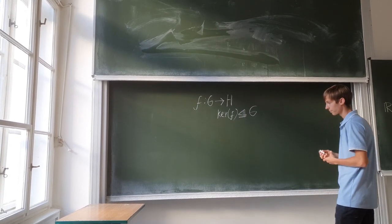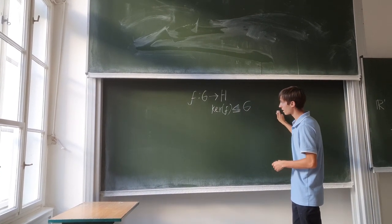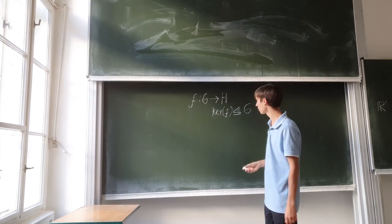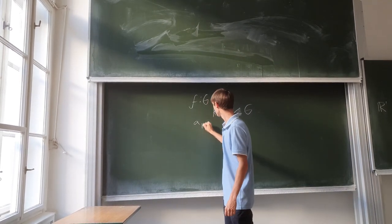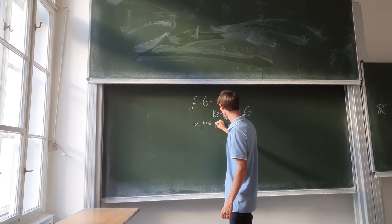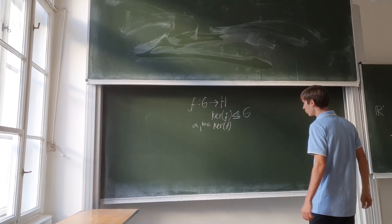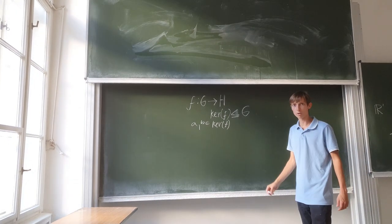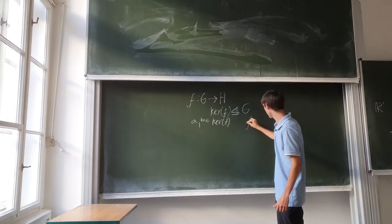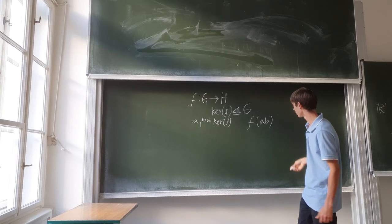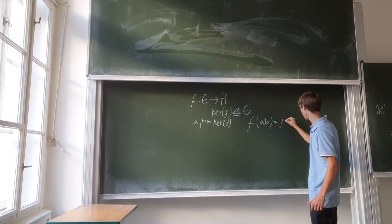So we want to prove that - well, we can take two arbitrary elements a, b inside kernel f. Let's say a, b are inside kernel f, and what we do now is use the homomorphism equation.